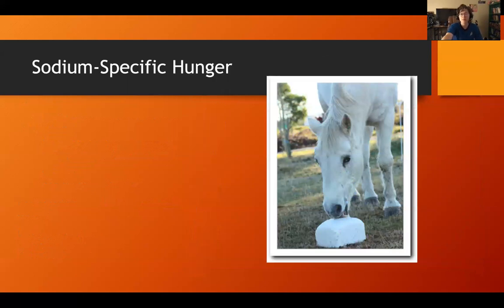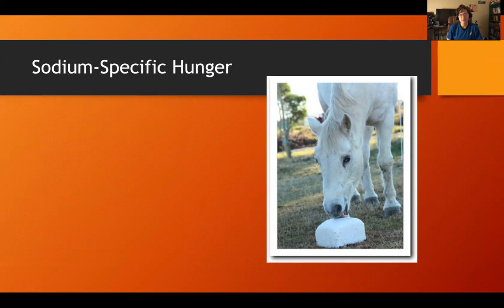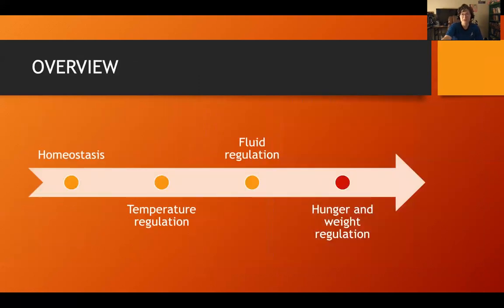When you have hypovolemic thirst, you need to replenish salts as well as fluids. After donating blood, I noticed it was similar to a hangover — a headache nearly impossible to get rid of. I kept drinking water, which actually made it worse by diluting the salt concentration further. You need to replenish salts too — a pickle and a banana for sodium and potassium, along with plenty of water. In the next segment, we'll move on to hunger and weight regulation.